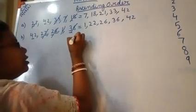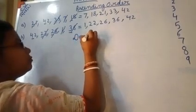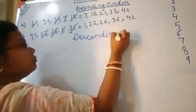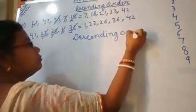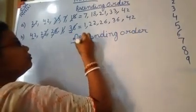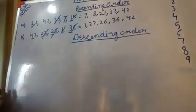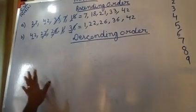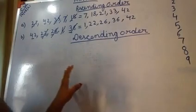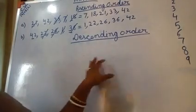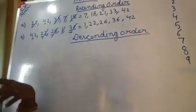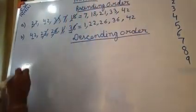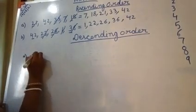Now we will do the descending order. Descending order means bigger number to smaller number — just the opposite of ascending. Ascending means smaller to bigger; descending means bigger number to smaller number. So we will go backward counting from 9 to 1. This is also the same process — you have to go to the tens and ones place.